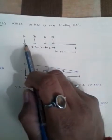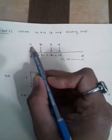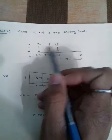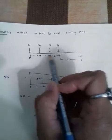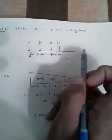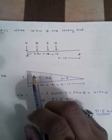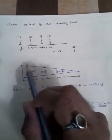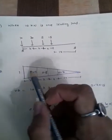Now for Case 2, when the 10 kN is the leading load, the loads are arranged as 10, 30, 5, 15 with the same 2-meter spacing. The remaining distance is still 14 meters, and we calculate the reaction Va similarly.